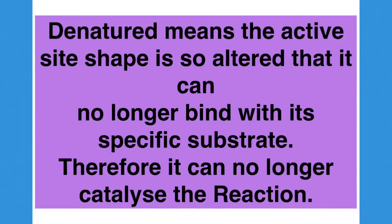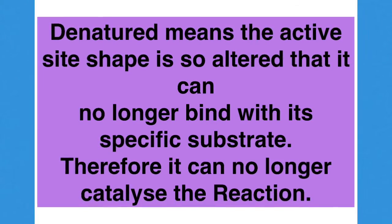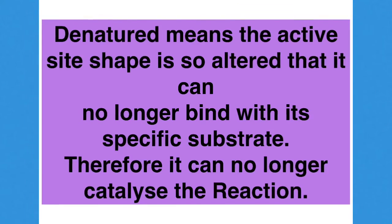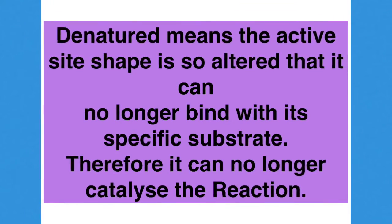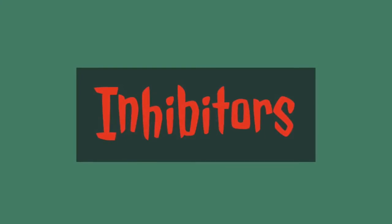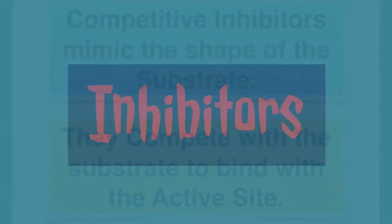Please ensure that you explain fully every term you use in your exams. For example, denatured means the active site shape is so altered that it can no longer bind with its specific substrate. Therefore, it can no longer catalyse the reaction. Let's very briefly discuss inhibitors.